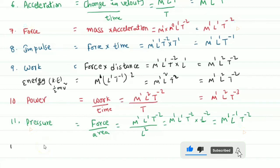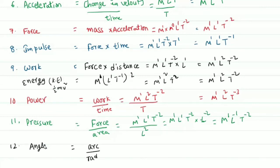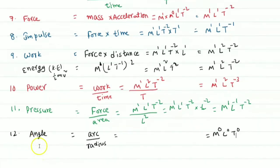Next is angle. Angle is defined as arc divided by radius. Both arc and radius are lengths, so their ratio is dimensionless. The dimensional formula for angle is M power 0, L power 0, T power 0.